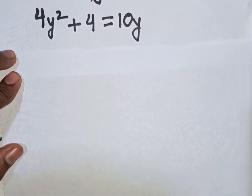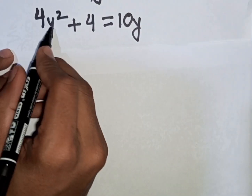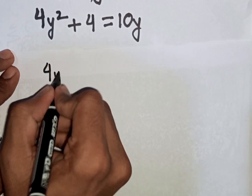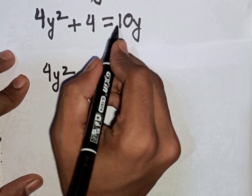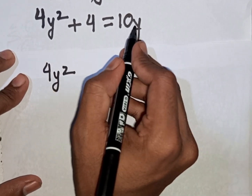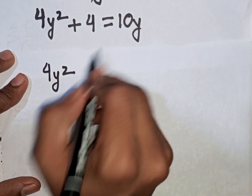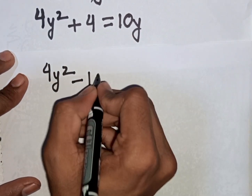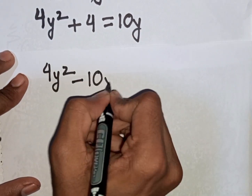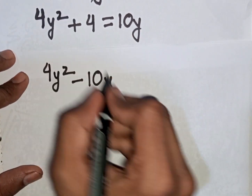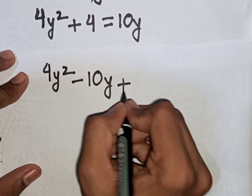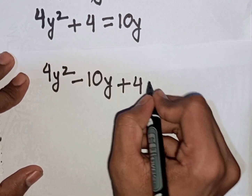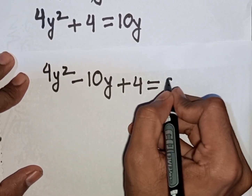We rearrange: 4y squared, then take 10y to the left side so it becomes minus 10y, then plus 4 equals 0.